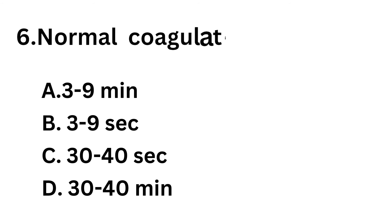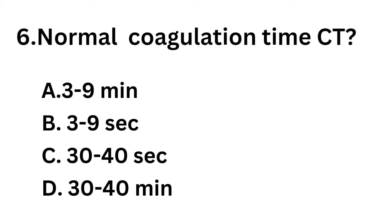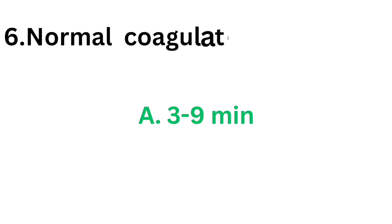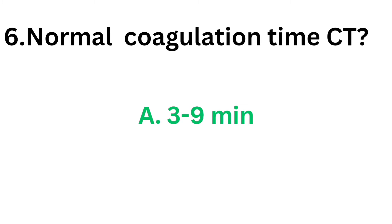Question number 6. Normal coagulation time. Option A: 3 to 9 minutes. Option B: 3 to 9 seconds. Option C: 30 to 40 seconds. Option D: 30 to 40 minutes. The correct answer is Option A, 3 to 9 minutes.